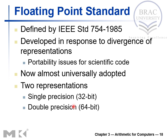The floating point standard is defined by IEEE and is called IEEE 754, introduced in 1985. It was developed in response to divergence of representation and portability issues for scientific code, and is now almost universally adopted. It has two representations: single precision and double precision. We will be mainly looking at single precision values.